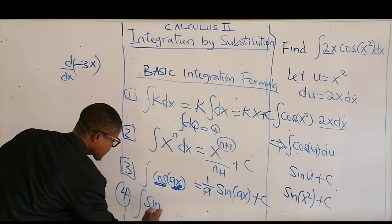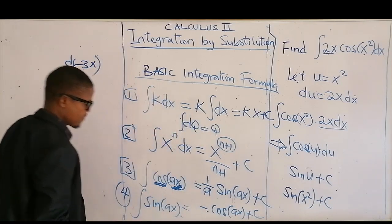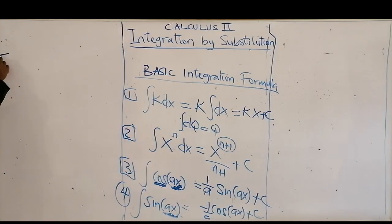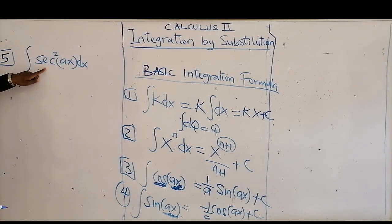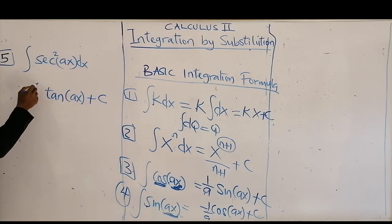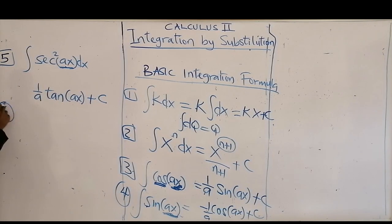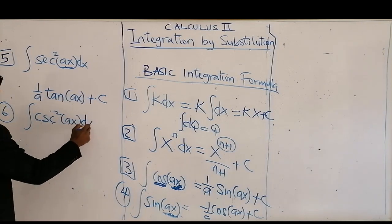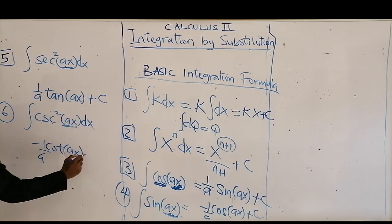The fifth formula: the integral of sec²(ax) gives you tan of the function, plus the constant of integration. Again, you divide by the derivative of the inner function, which is 1 over a. The sixth one is the integral of cosec²(ax), which gives you minus cos of the function, divided by the derivative of the inner function, plus c. We must note that for these rules to be applicable, the expressions here must differ by a constant only.